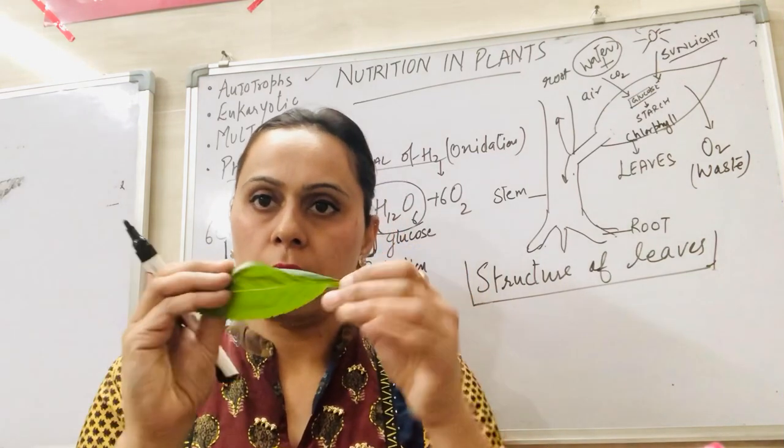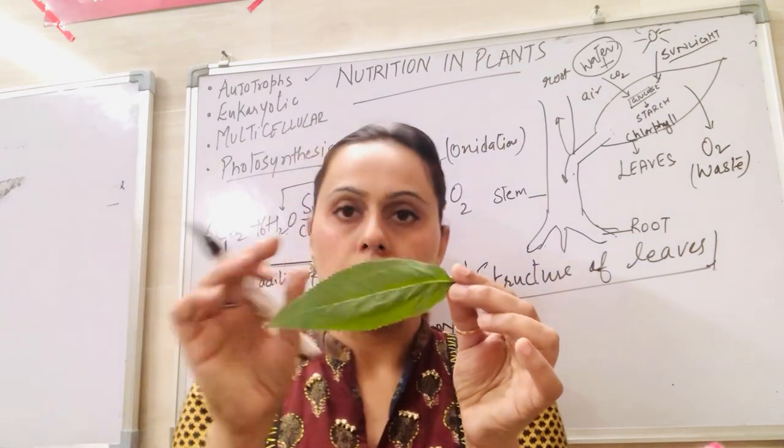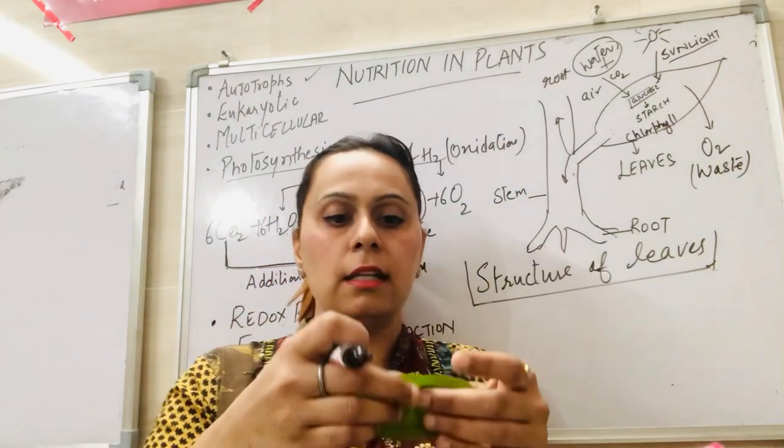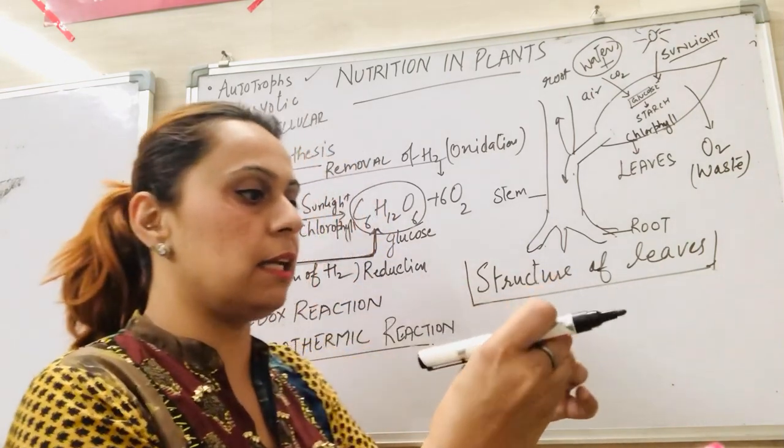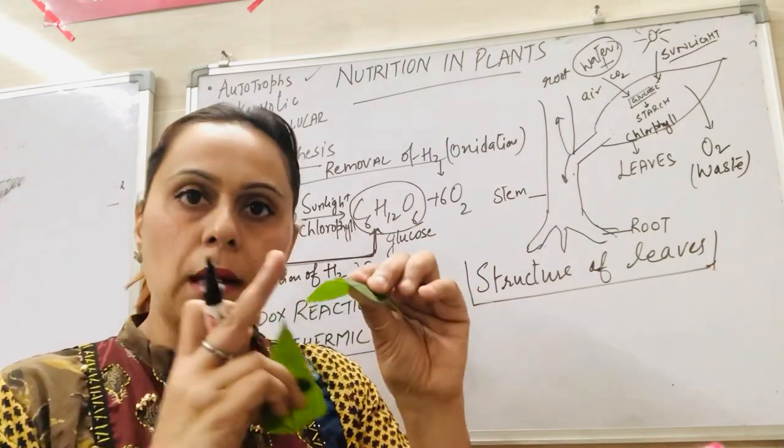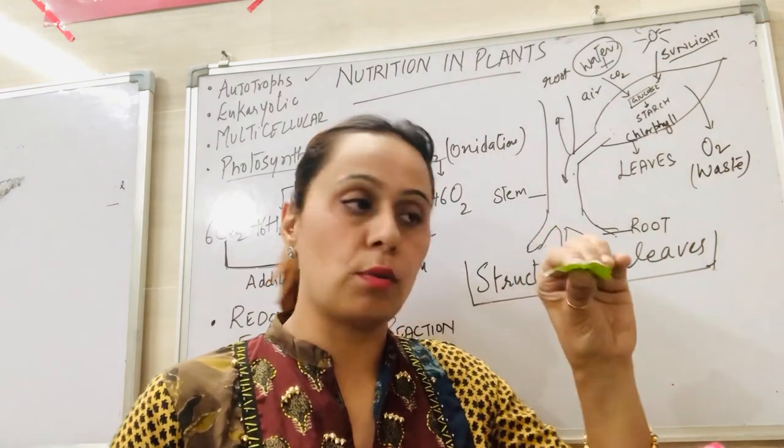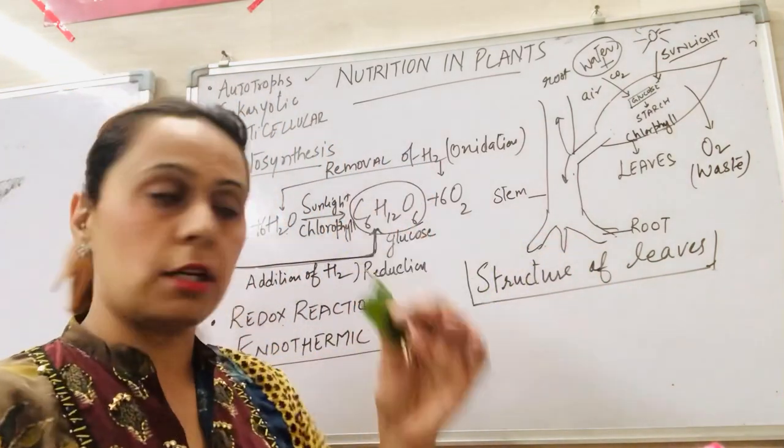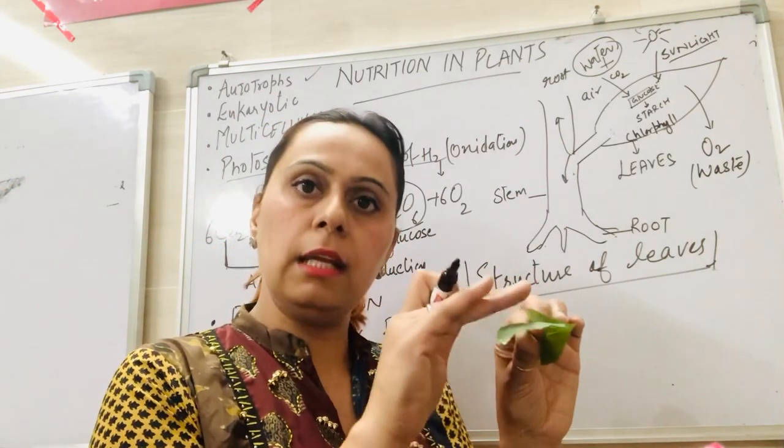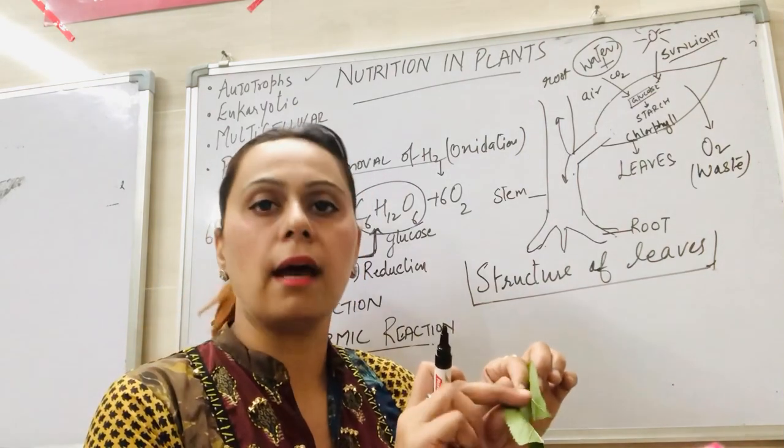If we check this leaf, the lower portion is comparatively a little rough compared to the upper portion. Now if we tear this leaf from the center, this thin portion, if we look under the microscope, we will see the structure. Then we will see that the upper layer and the lower layer. Upper layer is shiny because of a waxy coating that is called cutin and the lower layer is a little rough. That means it doesn't have that waxy coating.